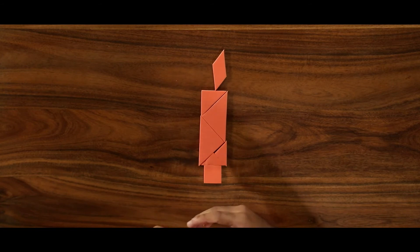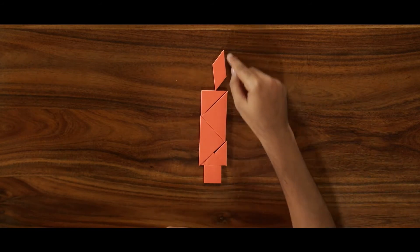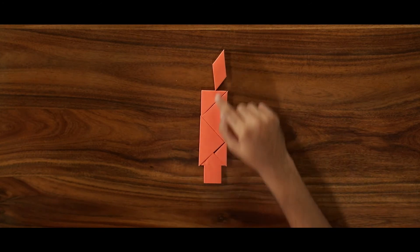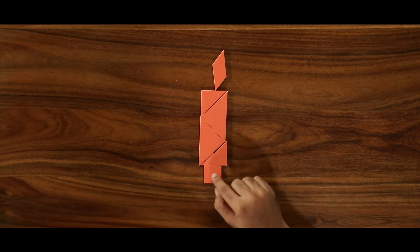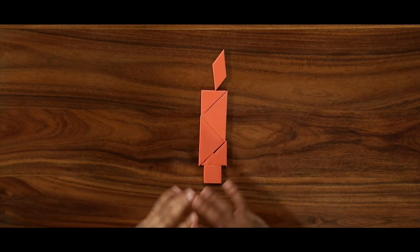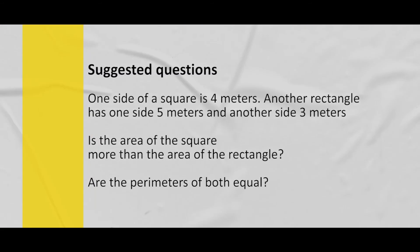The perimeter may vary, but their area will always be the same because the square is formed with these 7 pieces. All shapes put together will equal the area of the square. As we have seen, the perimeter may vary, but the area will remain the same.